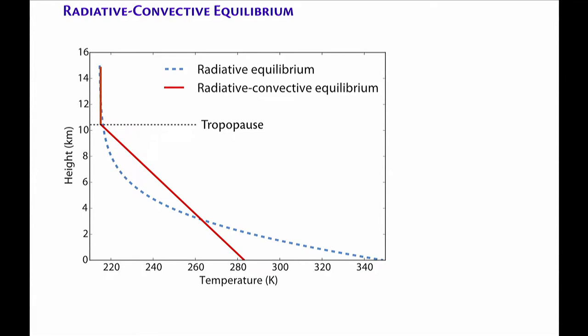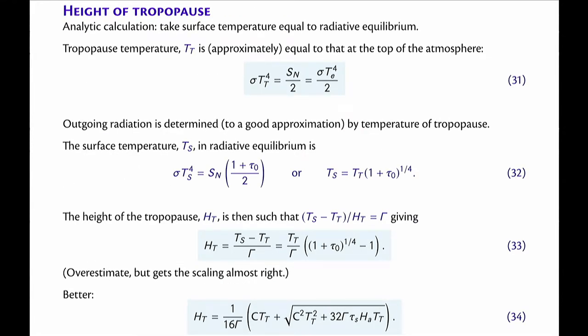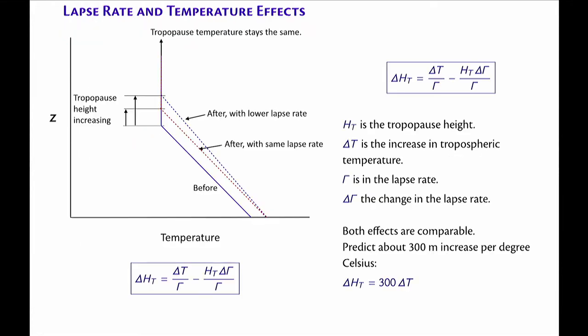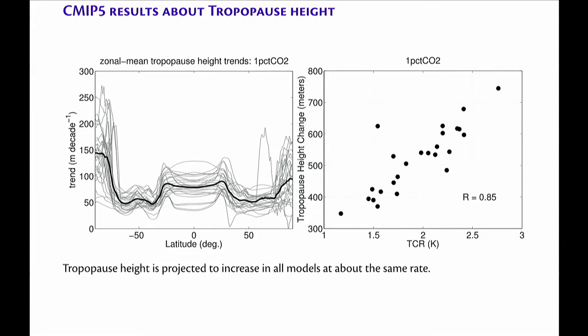One difference between the middle latitudes and the tropics is that the lapse rate is different. Then it gives you this prediction: the tropopause height must go up with global warming. So more greenhouse effects give you more warming.